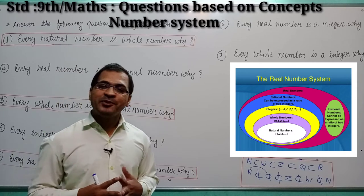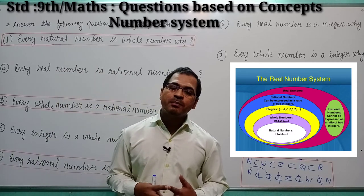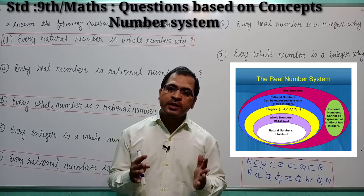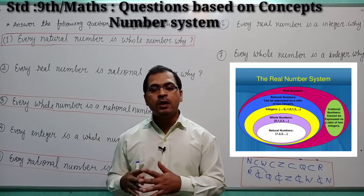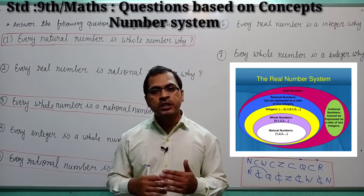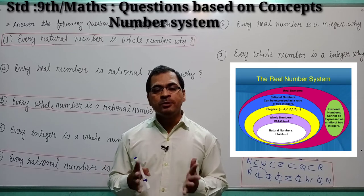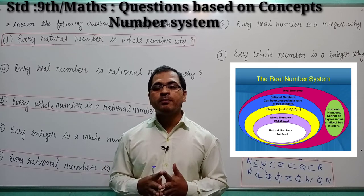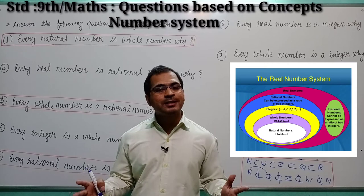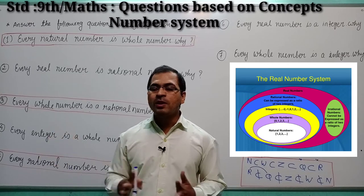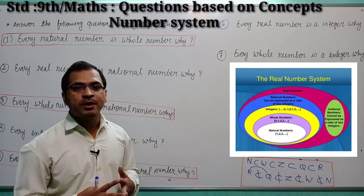First, natural numbers. What are natural numbers? Students, all the positive counting numbers are known as natural numbers. In positive counting numbers: 1, 2, 3, 4, 5, 6, up to infinity — all these numbers are natural numbers.